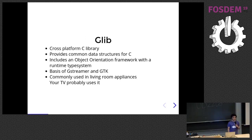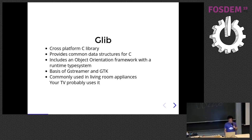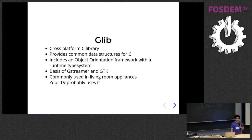Glib is a cross-platform C library. It provides common data structures for C because C does not have a standard library. It includes an object-orientation framework called GObject. It's what GStreamer and GTK are built on top of. It's commonly used in many embedded devices — you probably already have a couple of devices in your home that run with it.